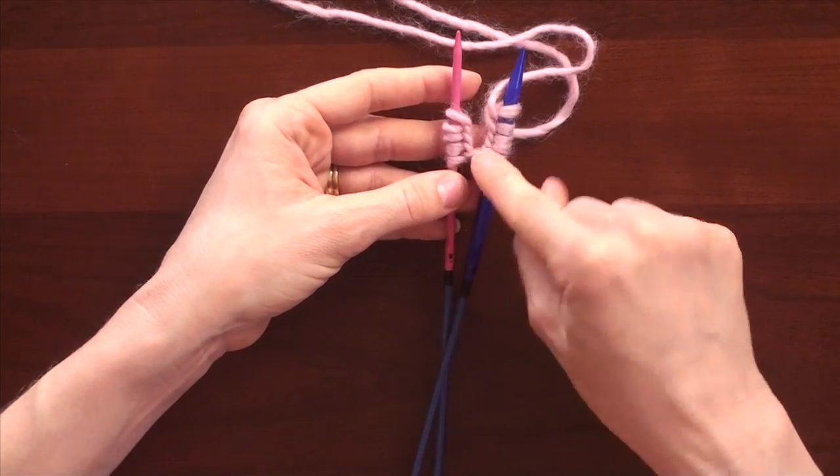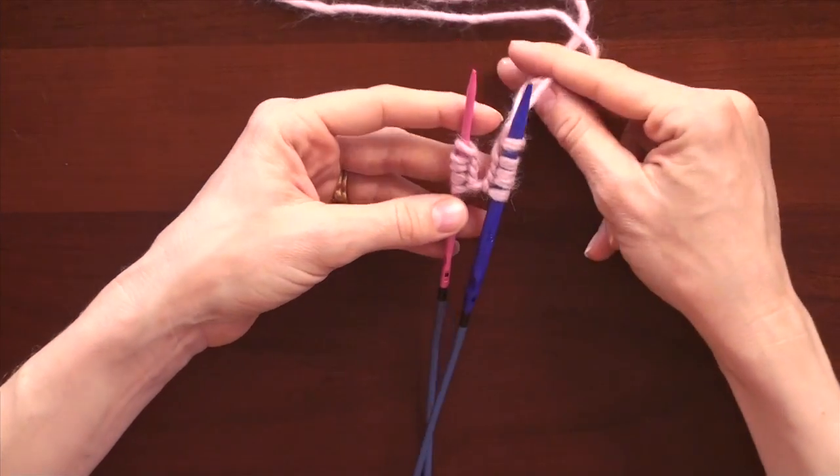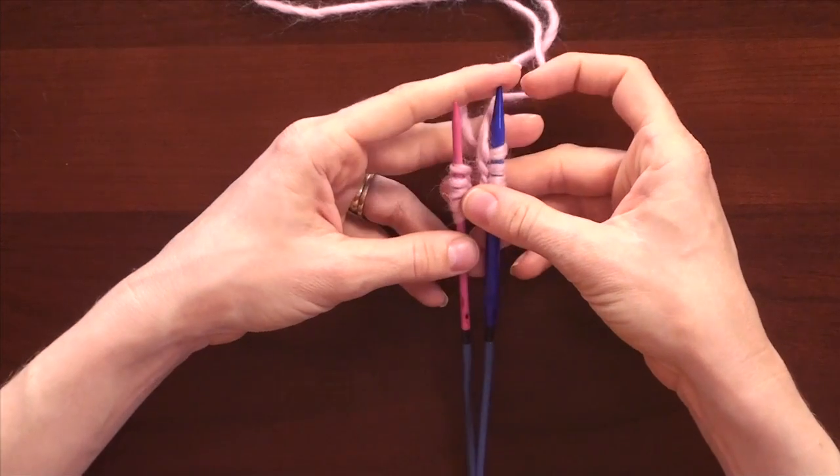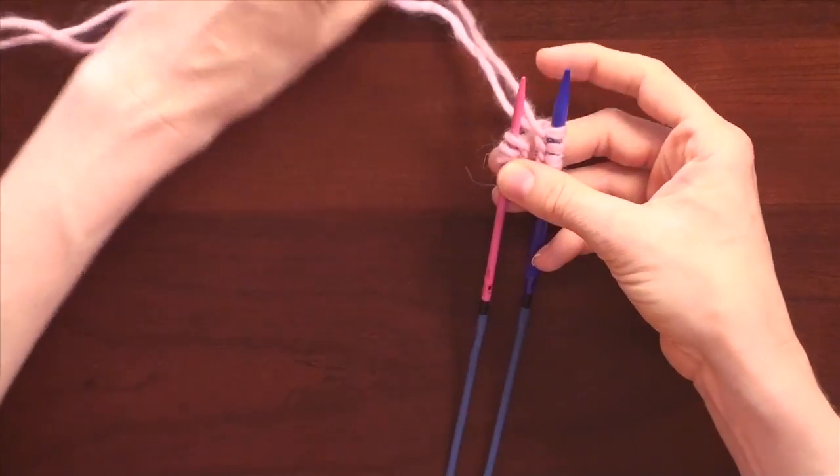Okay, so double checking that my cast on is in the center and not twisted around or wrapped around, as with any circular method, I can begin knitting this first stitch to join it in the round.